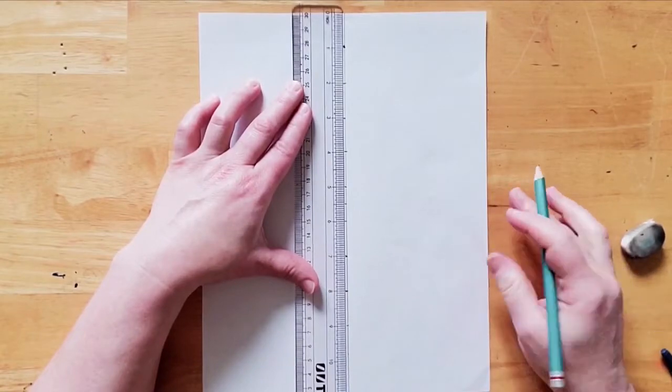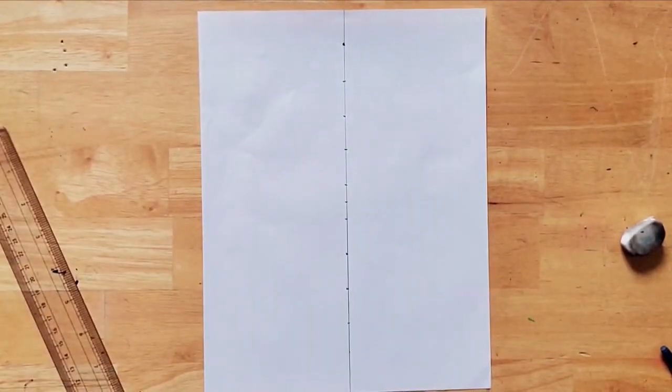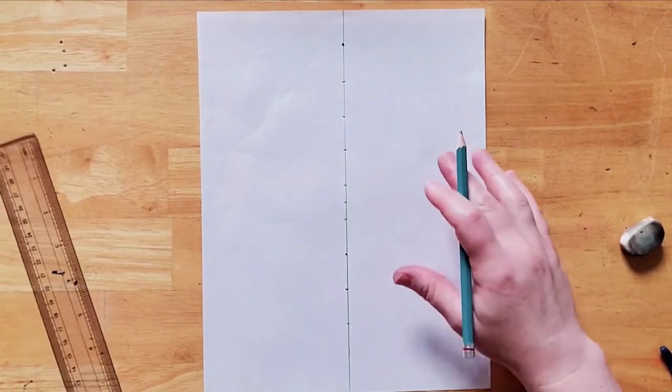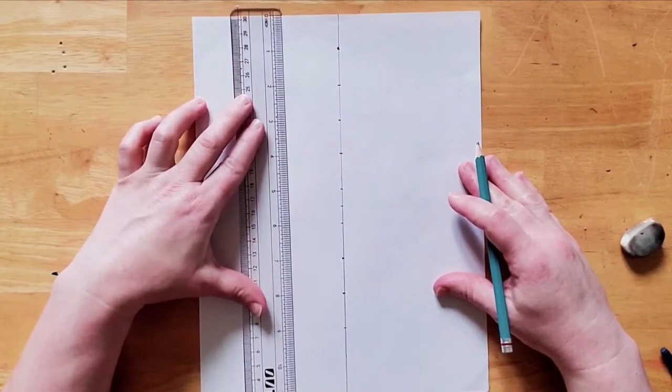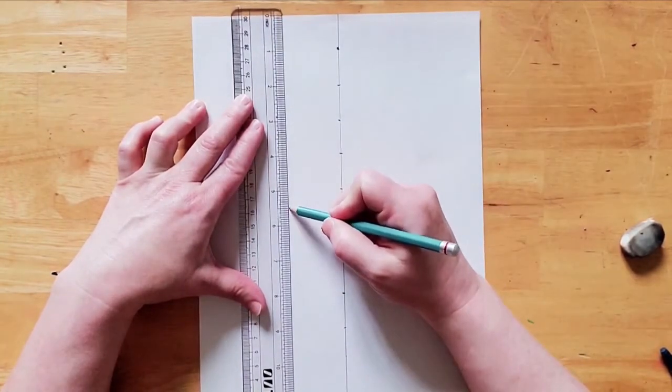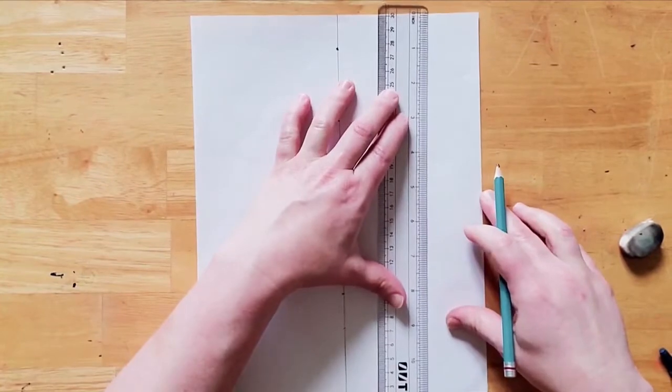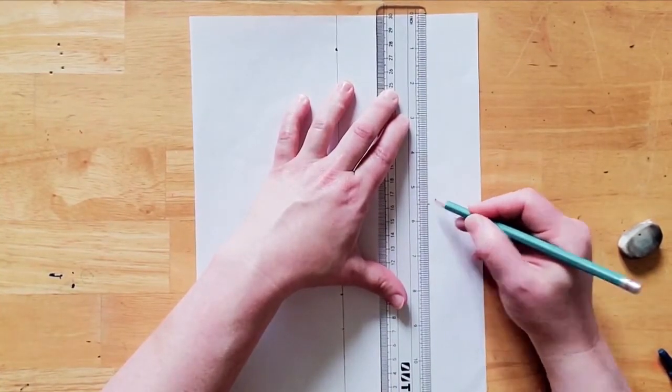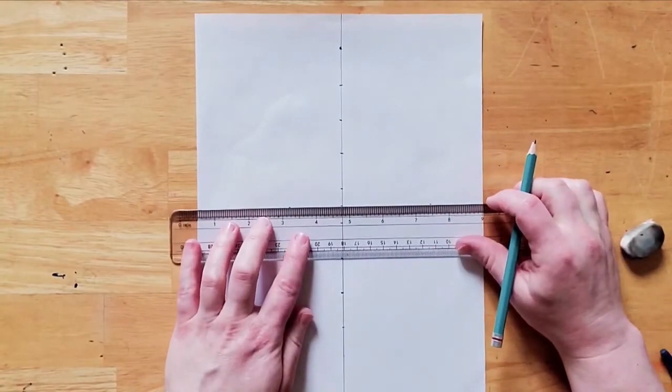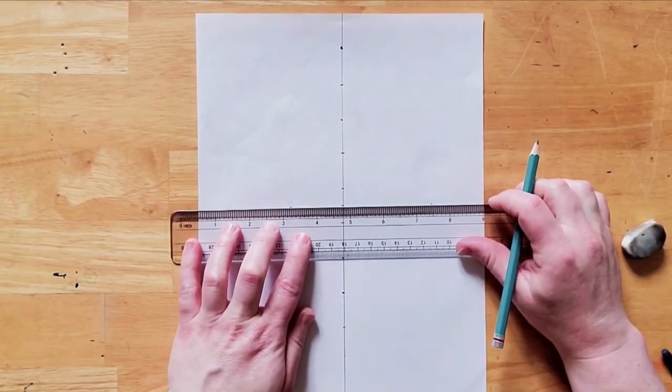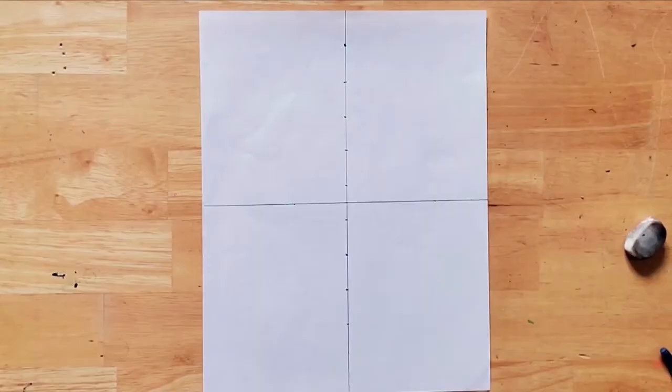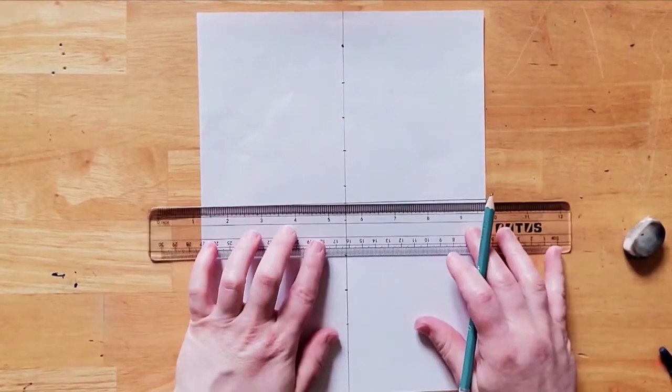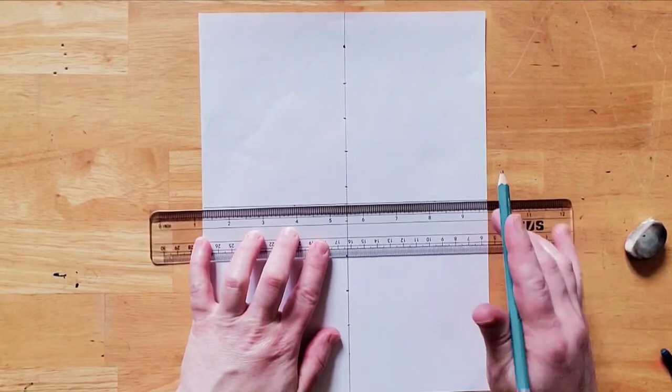Now, we're going to make a line that goes straight across the paper, crossing through our center mark. Be sure to measure it on your paper so your line is nice and straight. If you're using regular paper, this would be the five and a half inch mark.